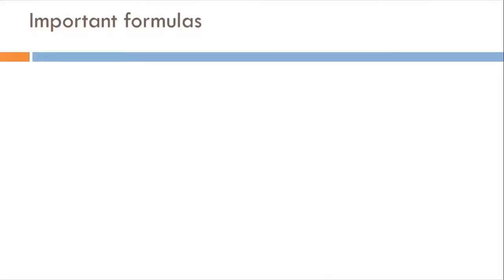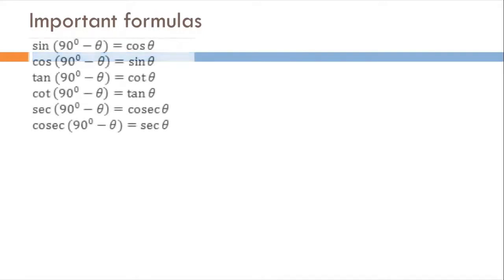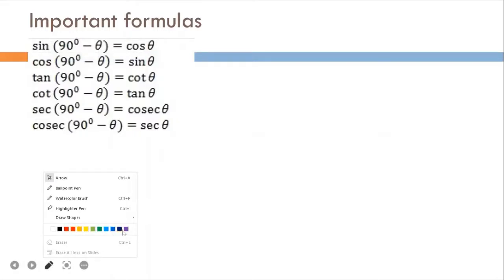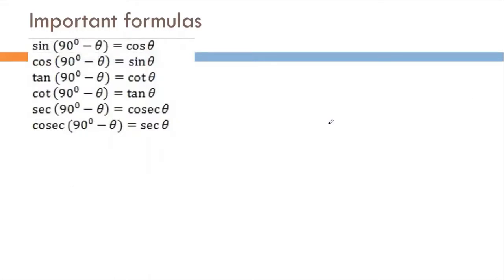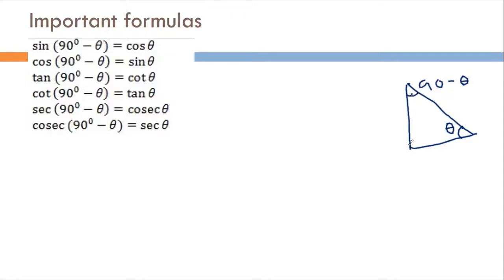In the first set of formulas, I will discuss the angular difference. If we consider this right-angle triangle, and if we consider this angle is theta, then the other acute angle is 90 minus theta. This is 90 degrees. So, what is the ratio? This is the perpendicular, this is the base, and this is the hypotenuse.